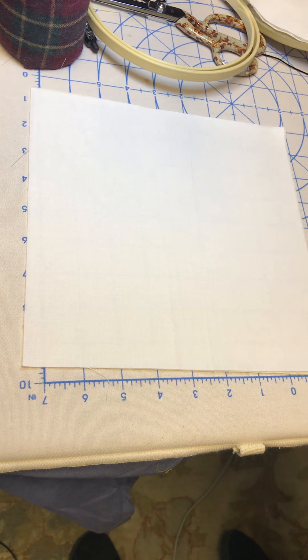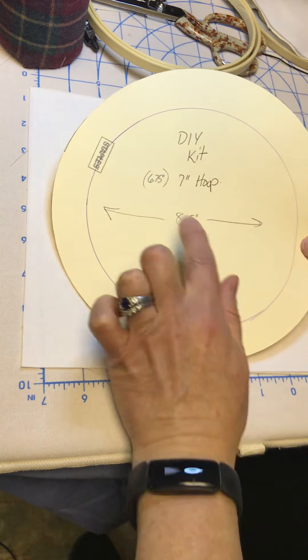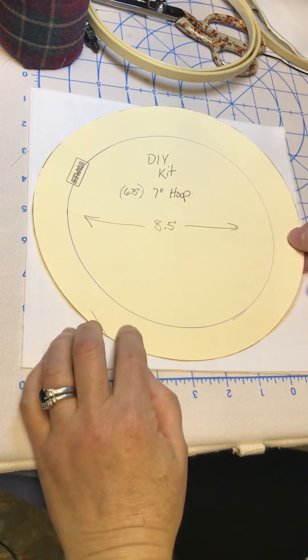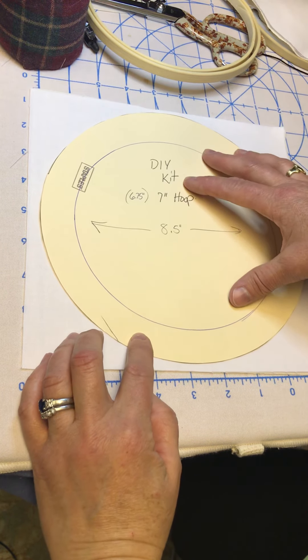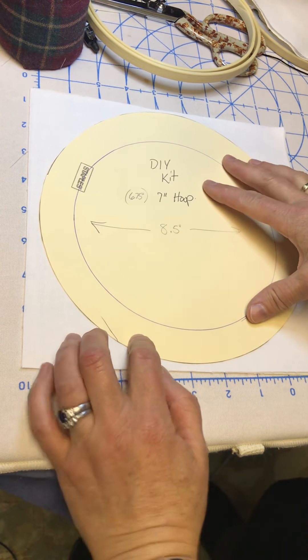Let's find a little template here. So I marked and labeled it for myself as a seven inch hoop even though it's really 6.75. My circle template measures across at eight and a half inches and that's going to give us enough fabric for the end when we finish it off.